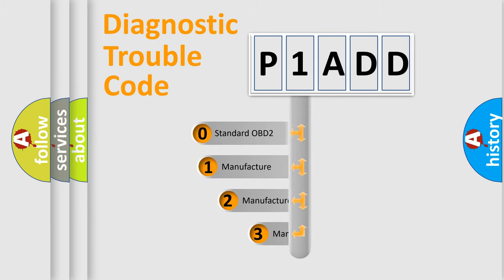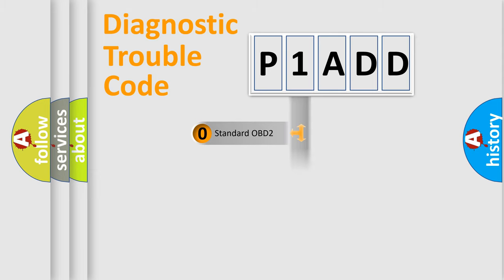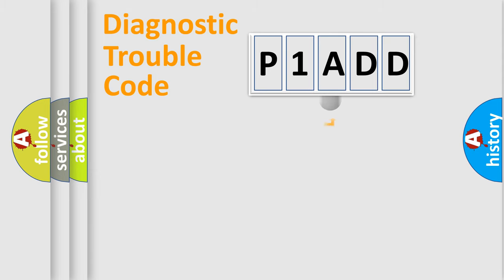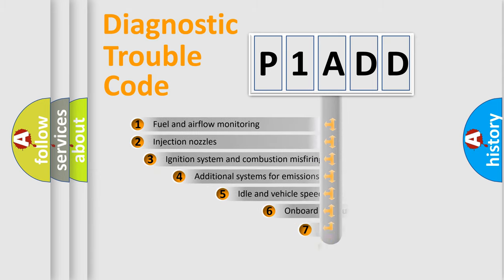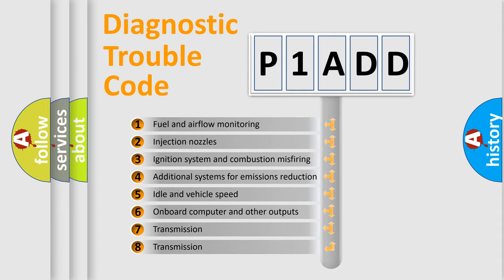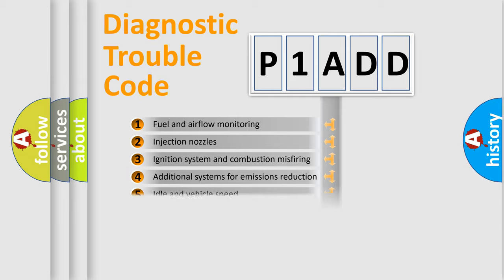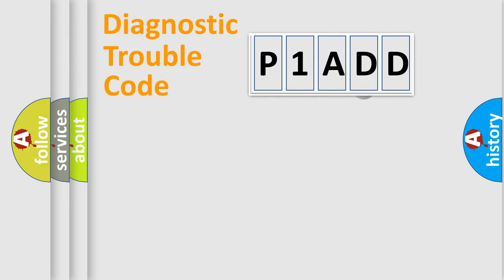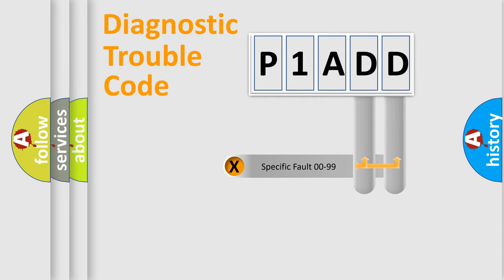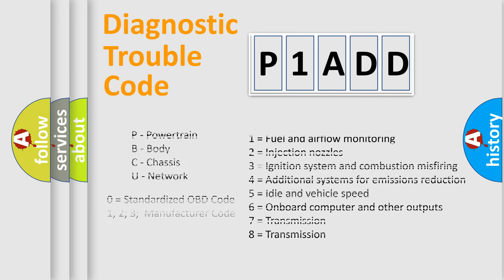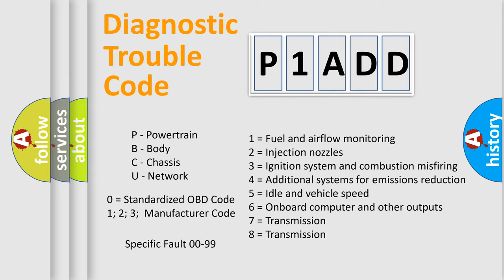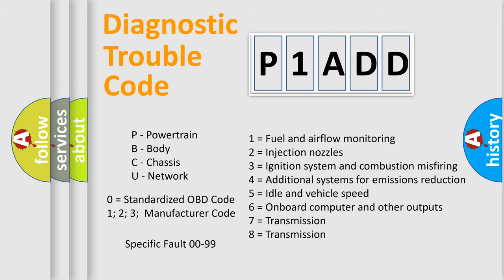If the second character is expressed as zero, it is a standardized error. In the case of numbers 1, 2, or 3, it is a more manufacturer-specific expression of a car-specific error. The third character specifies a subset of errors. This distribution is valid only for the standardized DTC code, and only the last two characters define the specific fault of the group. Such a division is valid only if the second character code is expressed by the number zero.